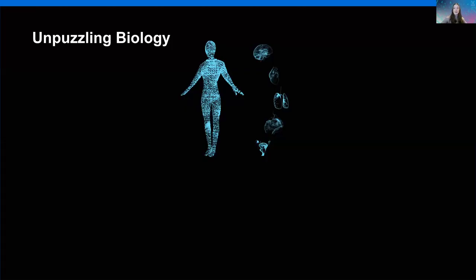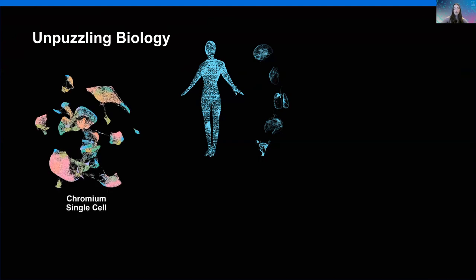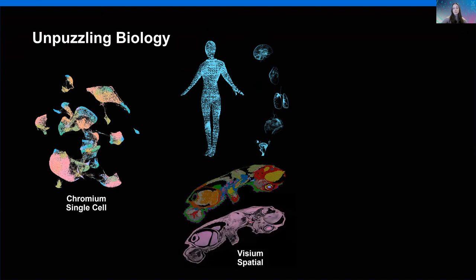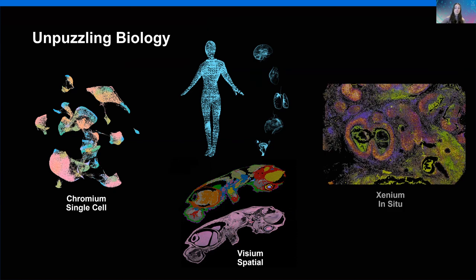Here at 10x, we recognize there is a wide variety of biological questions and sample types. Our ultimate goal is to develop a portfolio of products to help answer the questions you have. Our mission is to build tools to help unravel the complexities of biology. We do this across three technology platforms: Chromium for single cell to interrogate the whole transcriptome and epigenome, Visium for spatial transcriptomics to ask where gene expression is located in the context of your tissue section, and our latest in situ platform, Xenium, which provides extremely high resolution single cell information with spatial localization from a targeted panel of genes.